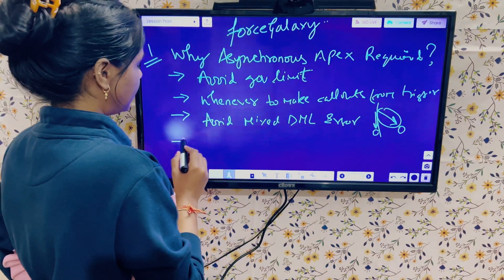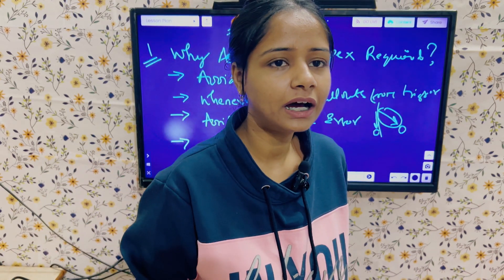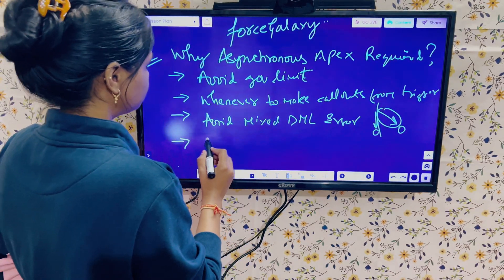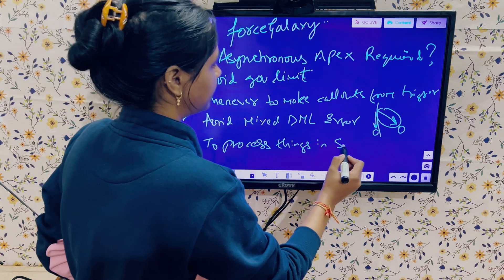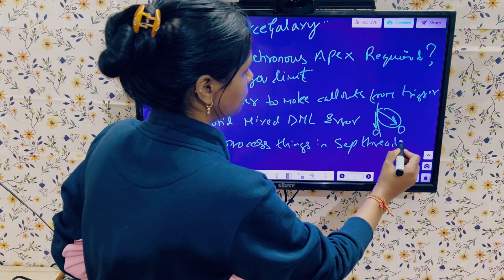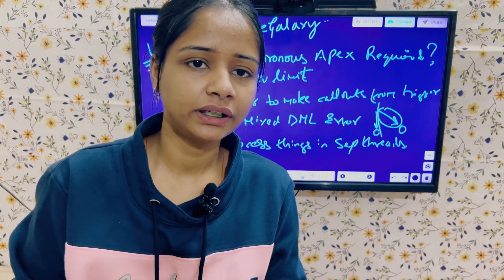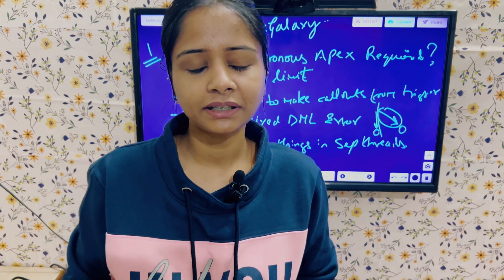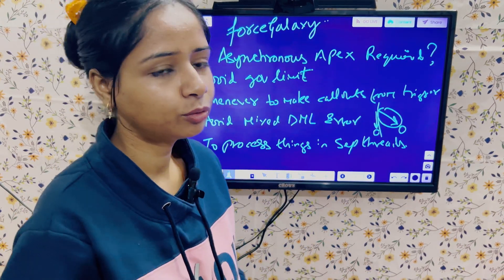The next point is: whenever we want to execute our logic in separate threads, we also require asynchronous Apex. In the synchronous way, things execute in a continuous sequential manner. But whenever the requirement comes to execute logic in separate, independent threads, we make use of asynchronous Apex to process things in separate threads.